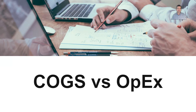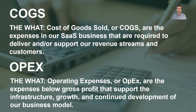Today's topic: COGS versus OPEX, a common question that I receive. So what is COGS? Cost of goods sold, or COGS, are the expenses in our SaaS business that are required to deliver and/or support our revenue streams and our customers.